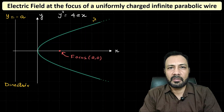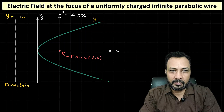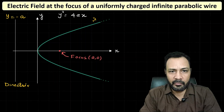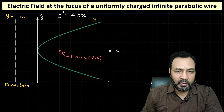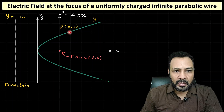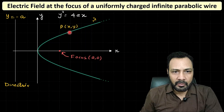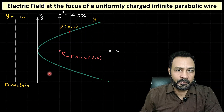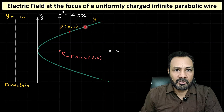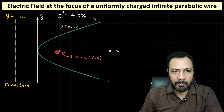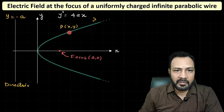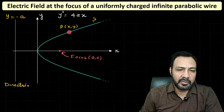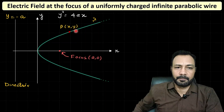The directrix has equation x = −a. Just as a circle is the locus of all points equidistant from a fixed center, a parabola is the locus of all points P(x, y) such that the distance from P to the directrix equals the distance from P to the focus. That ratio is called the eccentricity, and for a parabola eccentricity equals 1.